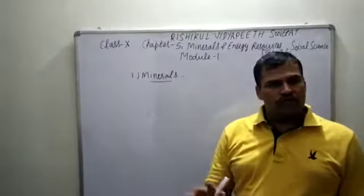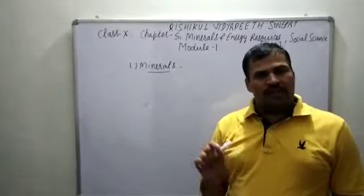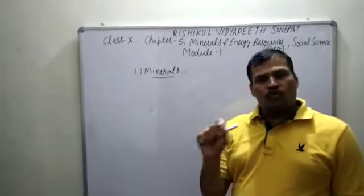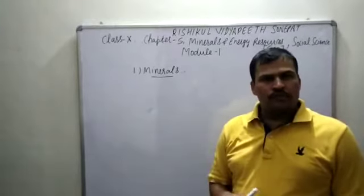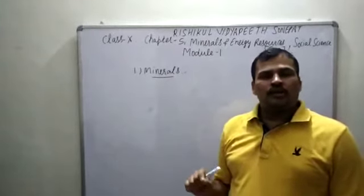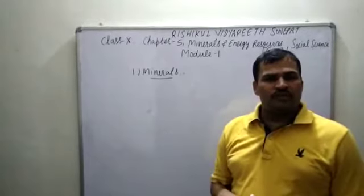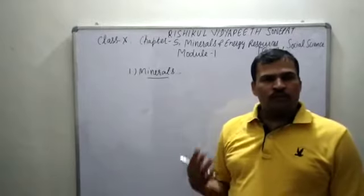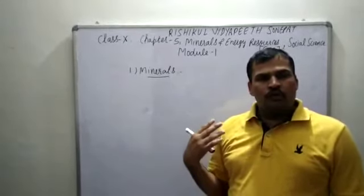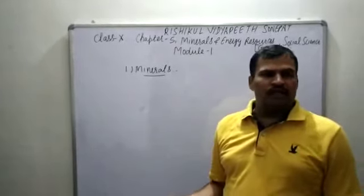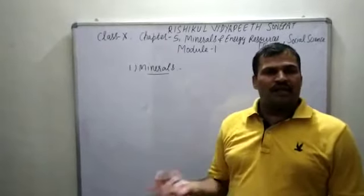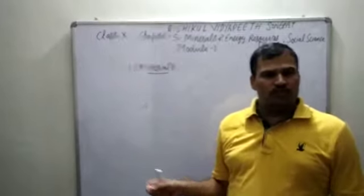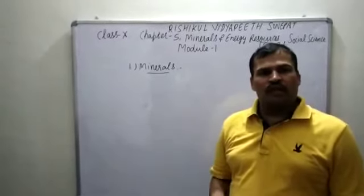You have also read in science that minerals are essential components for human beings. They are only 0.03% of our body, but even then they are very important. We need calcium, magnesium, phosphorus, iron, and many more minerals. All these are found in fruits, vegetables, and dry fruits — most things that we consume.